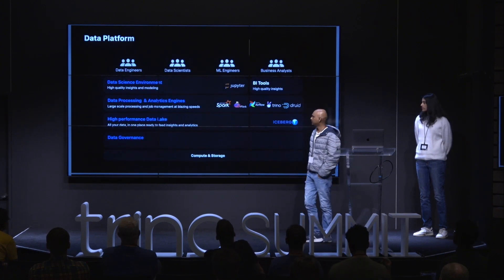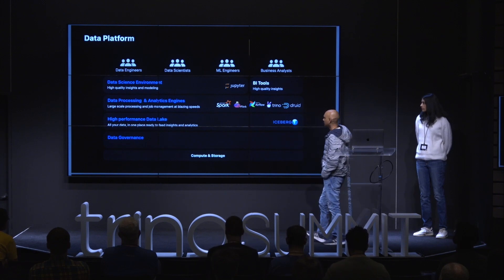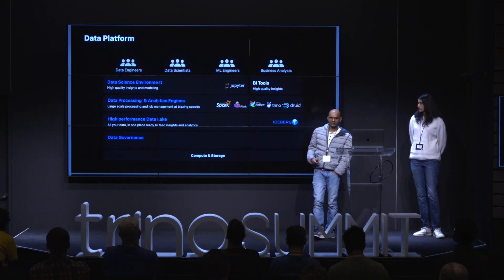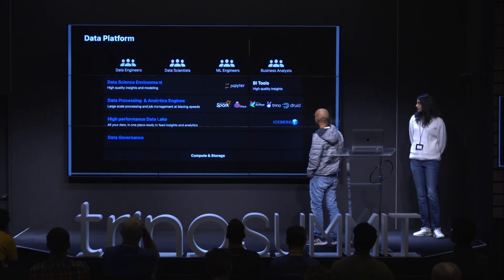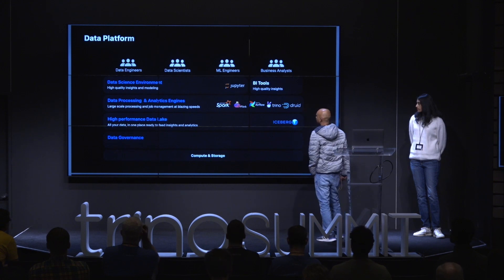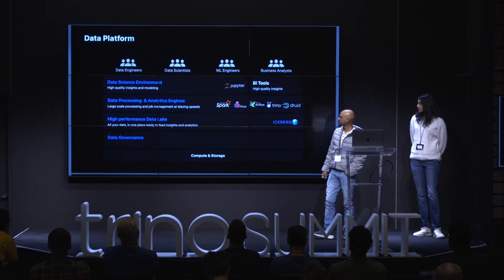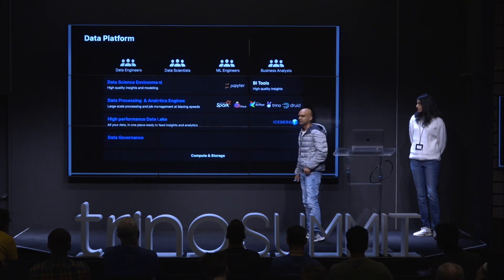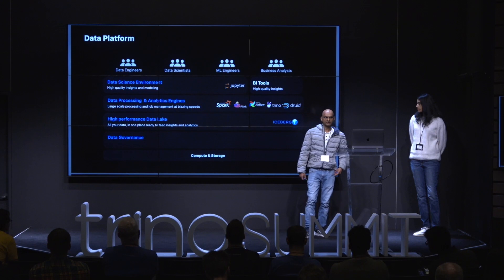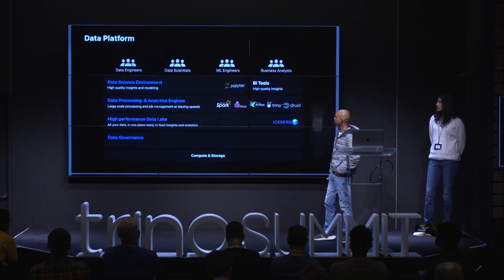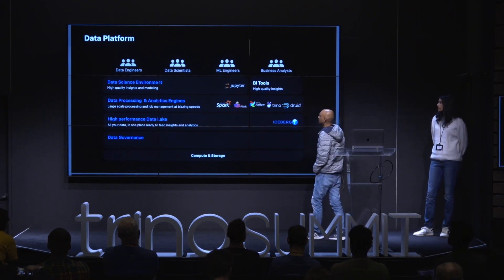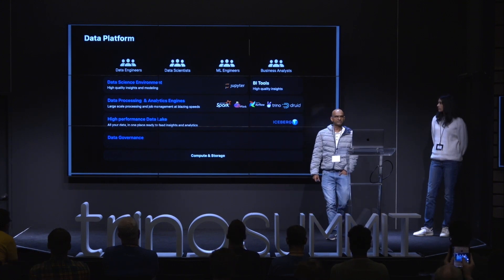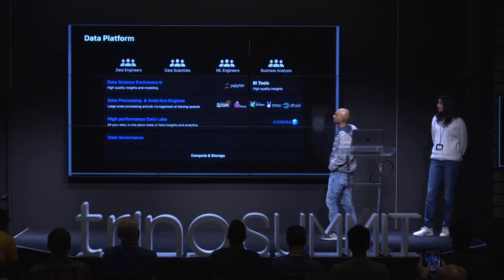Before we jump onto the use cases, here's an overview of our data platform. We have an in-house meta store for data governance, and our high-performance data lake is powered by Apache Iceberg. We use Spark and Flink for data processing and ETLs, and Apache Airflow for scheduling of jobs and workloads. Trino and Druid are used for ad hoc analytics and powering our dashboards. Our data teams and business analysts use BI tools and notebooks for interacting with our data platform.